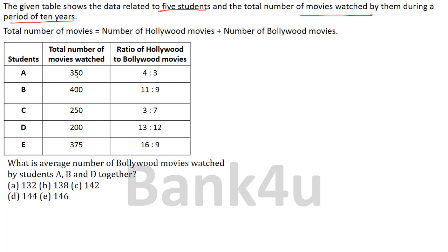For student A, total is 350. The sum of ratio parts is 4 plus 3 equals 7. So 350 divided by 7 equals 50. Therefore Hollywood movies = 50 into 4 = 200, and Bollywood movies = 50 into 3 = 150. So the split is 200 is to 150.